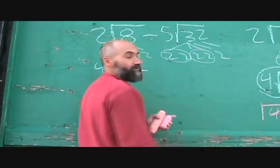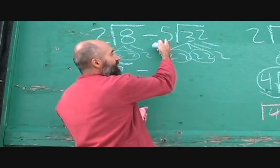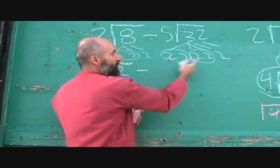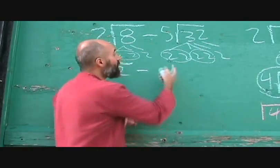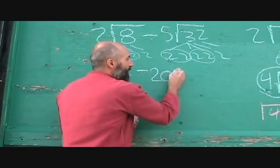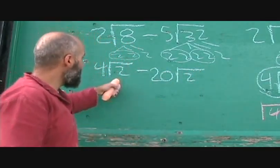Square root means bring out those two twos as a single two, bring out those two twos as a single two. So 2 times 2 is 4. That's a 4, because those two come out as a two, those two come out as a two. What's waiting for them is a 5, so 4 times 5 is 20√2.